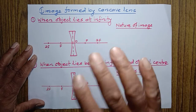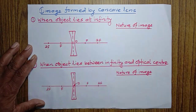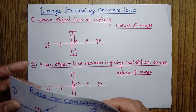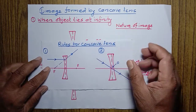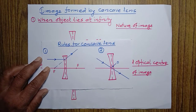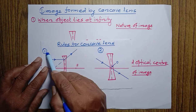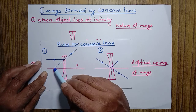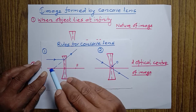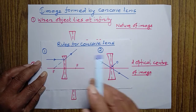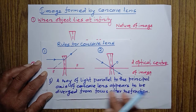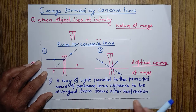In previous class, I told you that there are certain rules with which light passes through a concave lens. There are mainly two rules with which we will be able to draw the images formed by a concave lens. The first rule: a ray of light parallel to the principal axis of a concave lens appears to be diverged from focus after refraction.